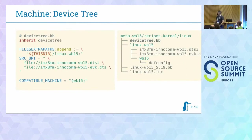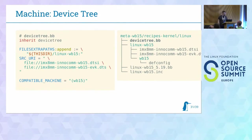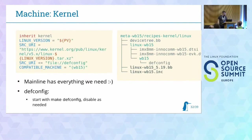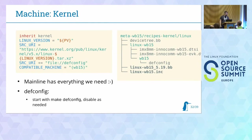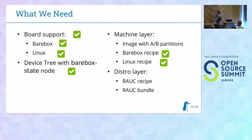Then we need a device tree too. The device tree was already existing — we already had a device tree for this board, so the device tree recipe is really simple. You just inherit the device-tree bbclass and everything works as intended. For the kernel, as Ahmed already said, everything is already supported mainline and we have a device tree. So the Linux kernel can just use the device tree and initialize our hardware. Our kernel recipe is really simple too: it just inherits the kernel bbclass, sets the version, and sets the compatible machine so Yocto knows which machine it's compatible with.